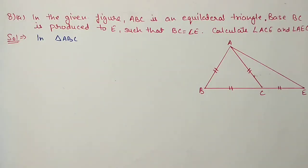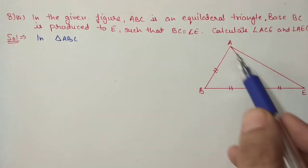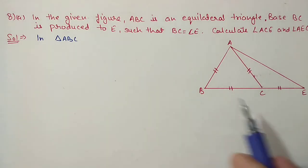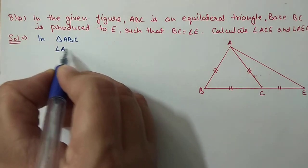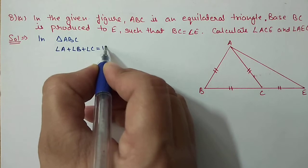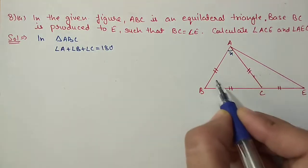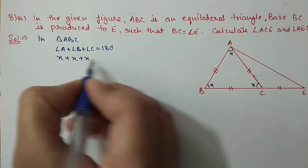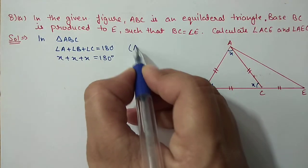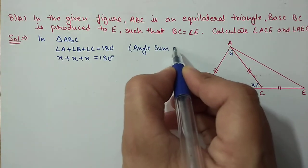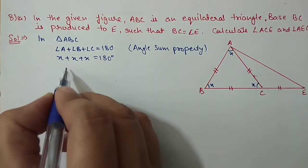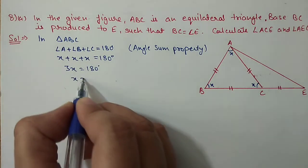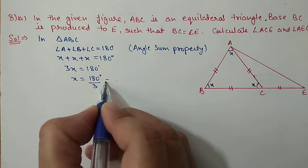Next we have question number 8, first part. In the given figure, ABC is an equilateral triangle and base BC is produced to E such that BC is equal to CE. Since it is an equilateral triangle, all three angles are equal. In triangle ABC, taking each angle as x, by angle sum property x plus x plus x equals 180 degrees, so 3x equals 180 degrees.